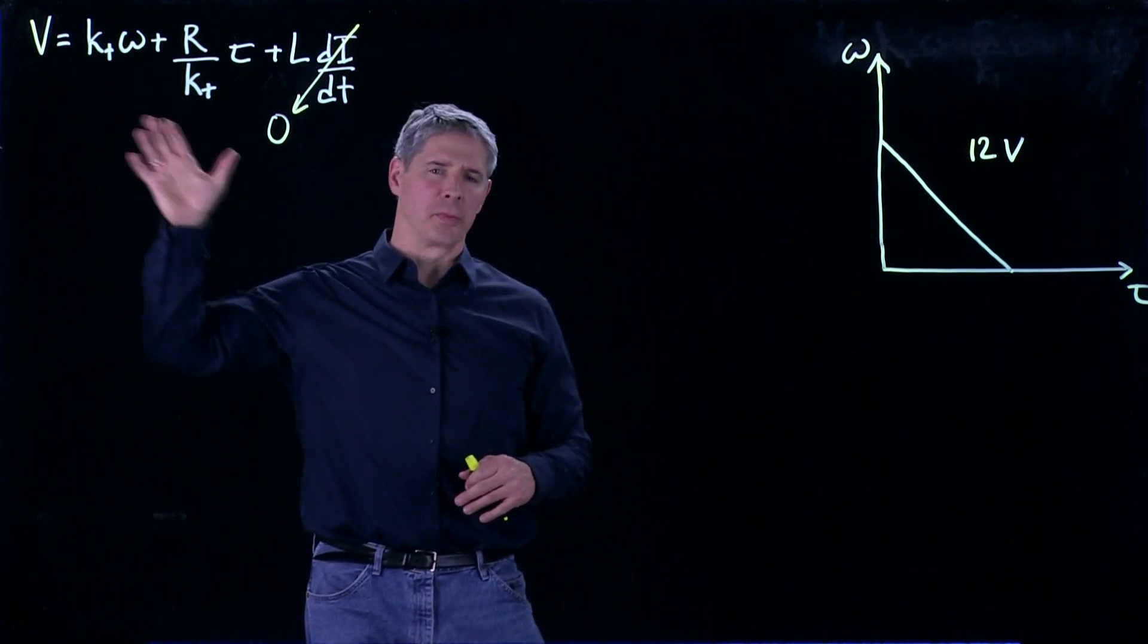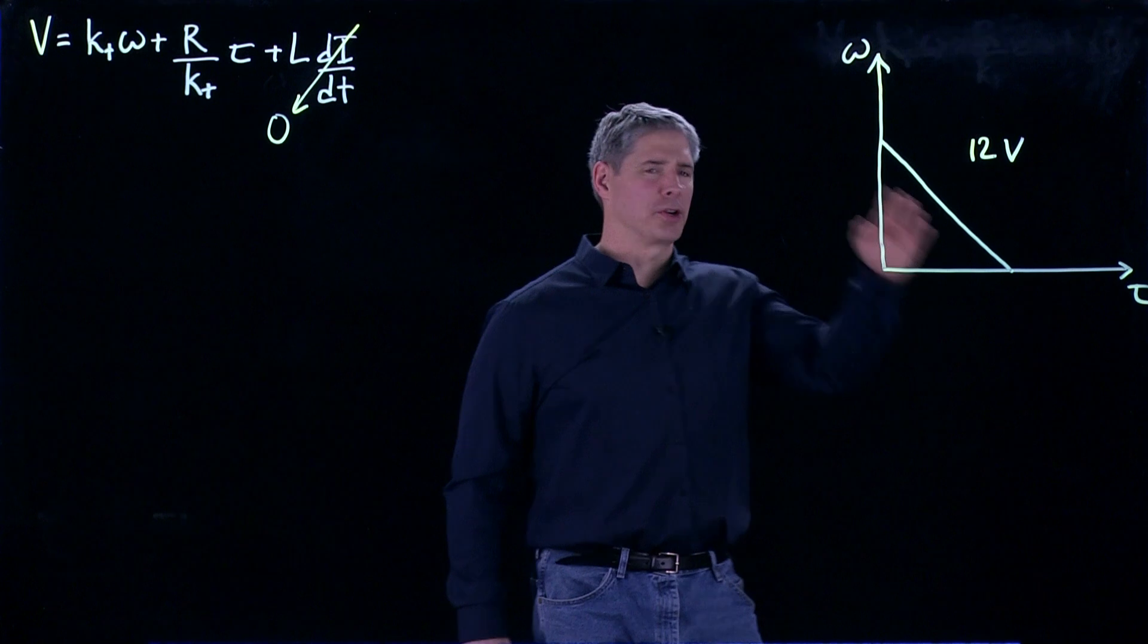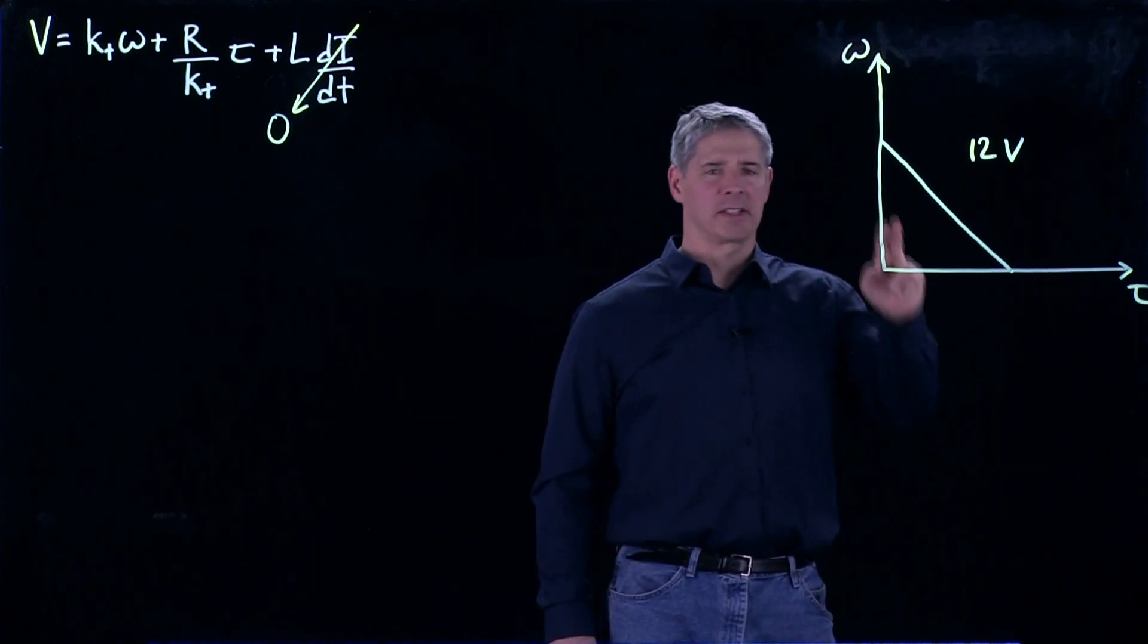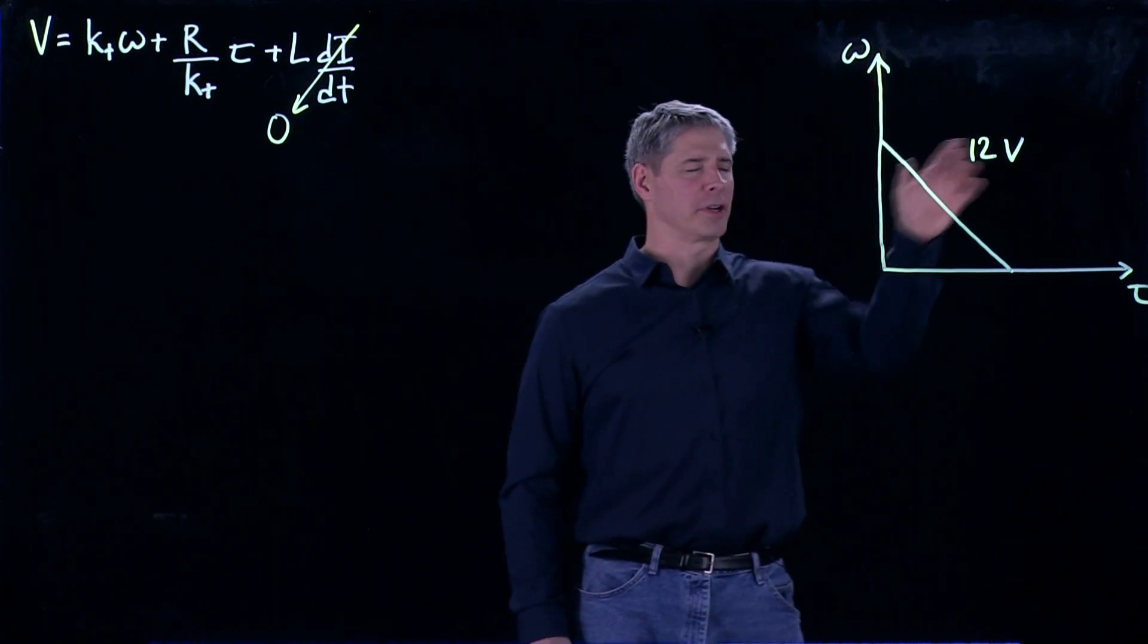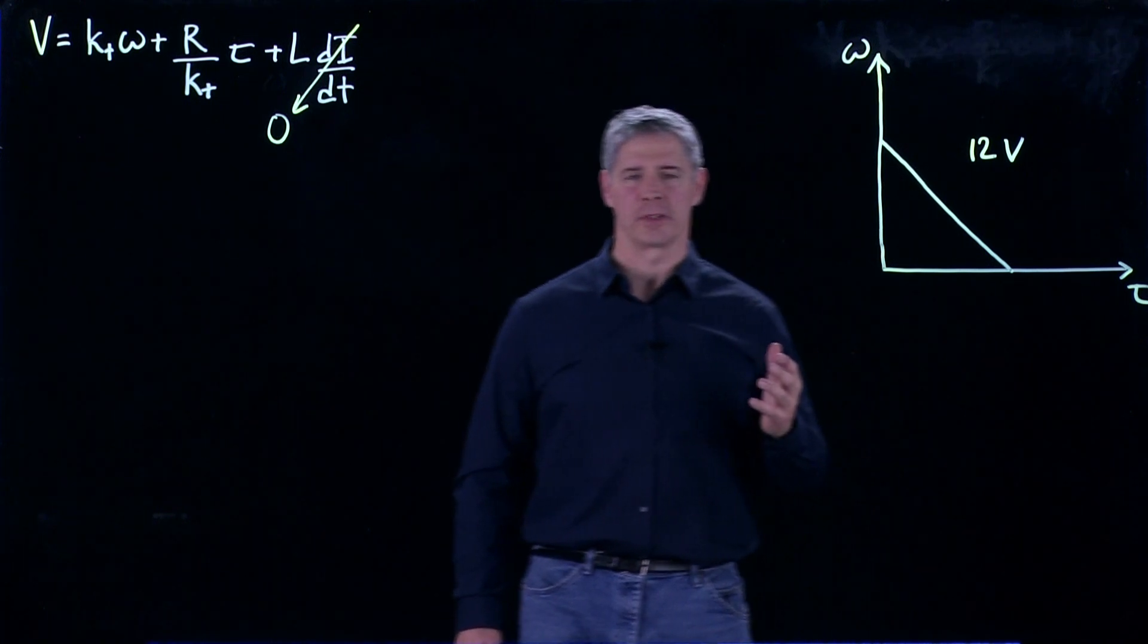So now with this equation of motion, we can plot the speed-torque curve over here, torque on this axis, speed on this axis, and we're doing it for a constant voltage, let's say 12 volts.